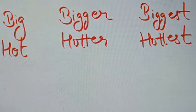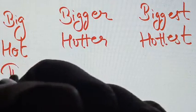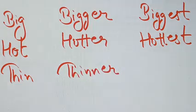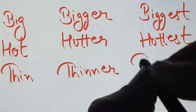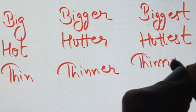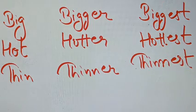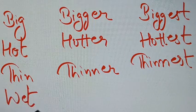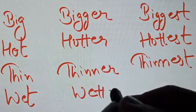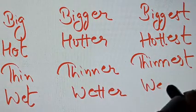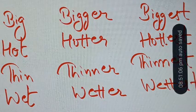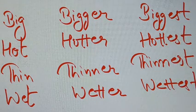Similarly 'hot' becomes 'hotter' — the last consonant is doubled — and 'hottest.' Then 'thin' becomes 'thinner' with the doubled consonant for comparative and 'thinnest' for superlative. Likewise 'wet' becomes 'wetter' and 'wettest.' Note down these examples in your notebook.